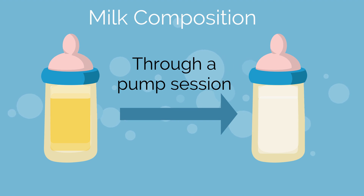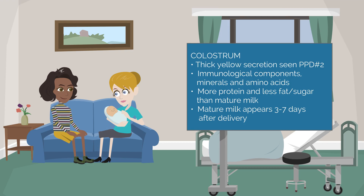It is important to note that the composition and volume of breast milk changes to meet the demands of the baby. The first secretions after delivery are called colostrum. This is a thick yellow secretion that is seen by postpartum day 2. It contains many immunological components and has more minerals and amino acids than mature milk. There is also more protein and less fats and sugars.